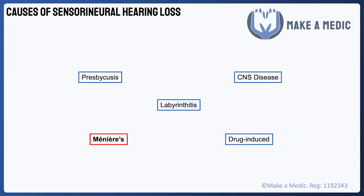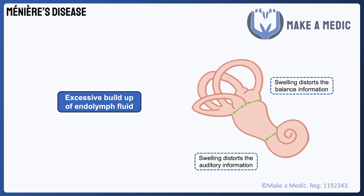Meniere's disease is a rare but important cause of sensorineural hearing loss, which is caused by the excessive build-up of a fluid called endolymph in the inner ear. This then interferes with the sensory cells of both the vestibular and auditory systems, resulting in the classic triad of hearing loss, tinnitus, and vertigo.